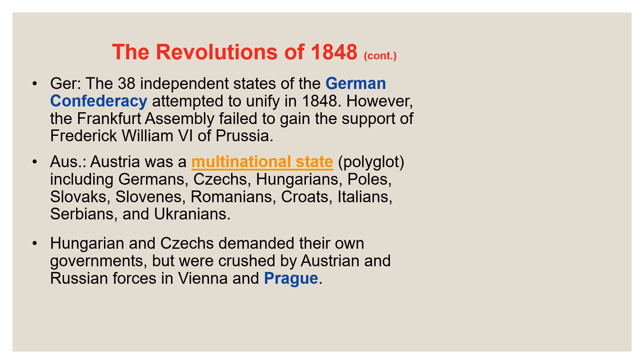The revolutions of 1848 as a whole failed. They failed to usher in a new era with classical liberalism and nationalism as major forces. In France, they got rid of the constitutional monarch and created a republic, but that republic gave way to a president who eventually named himself emperor — another Bonaparte on the throne. In Germany, they attempted unification through classical liberalism and failed because the staunchly conservative Prussian king refused to acknowledge it. In Austria, these revolutions failed as a strong emperor crushed the movement and reasserted his power. In general, the revolutions of 1848 failed.